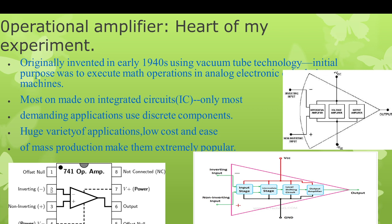Here is the internal block diagram of the operational amplifier showing the inverting input, non-inverting input, and one output. We apply plus VCC voltage and negative supply to ground. The op-amp has four internal stages: the input stage, intermediate stage, level shifting stage, and output amplifier. It operates as a differential amplifier, voltage amplifier, and output amplifier.